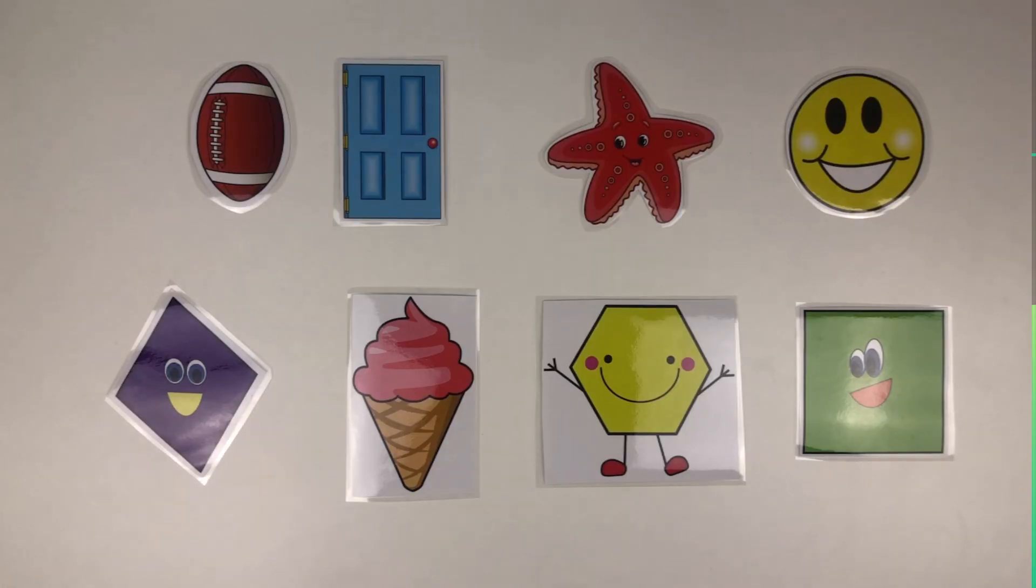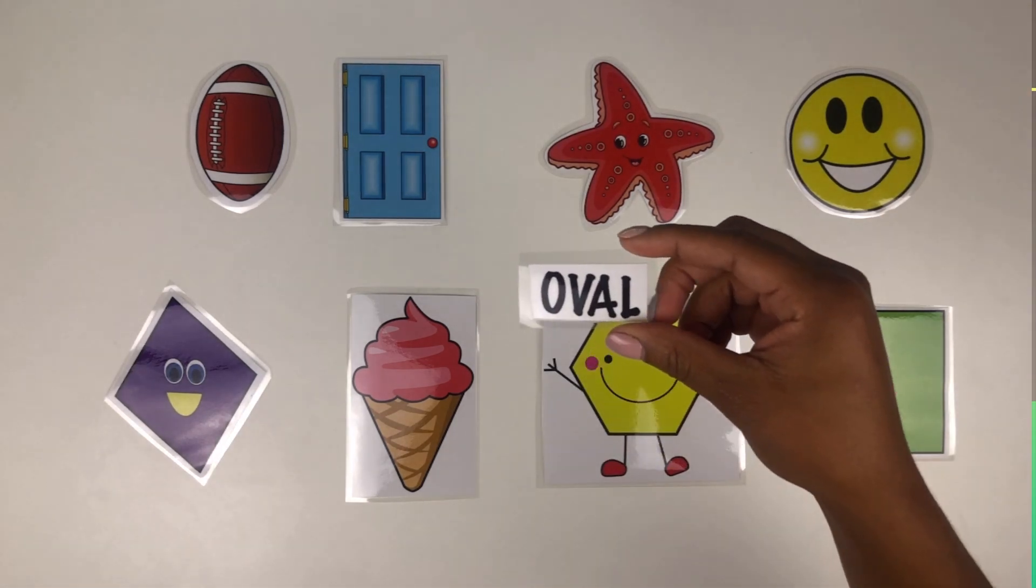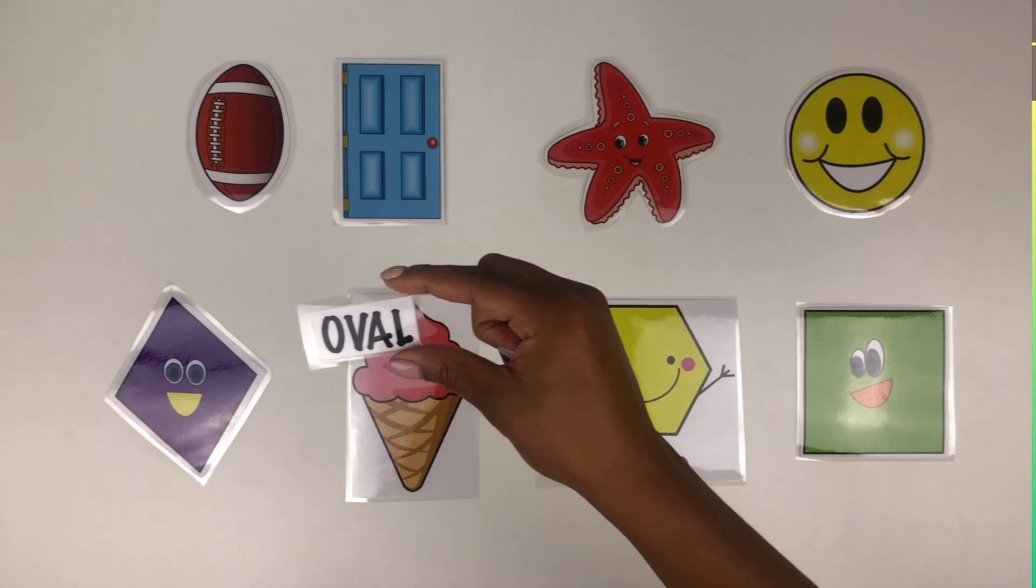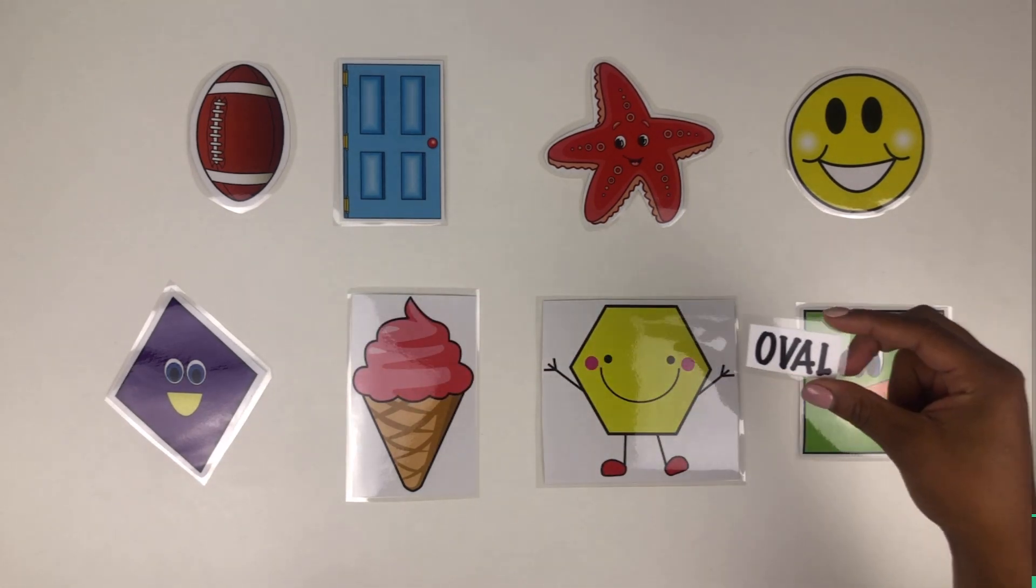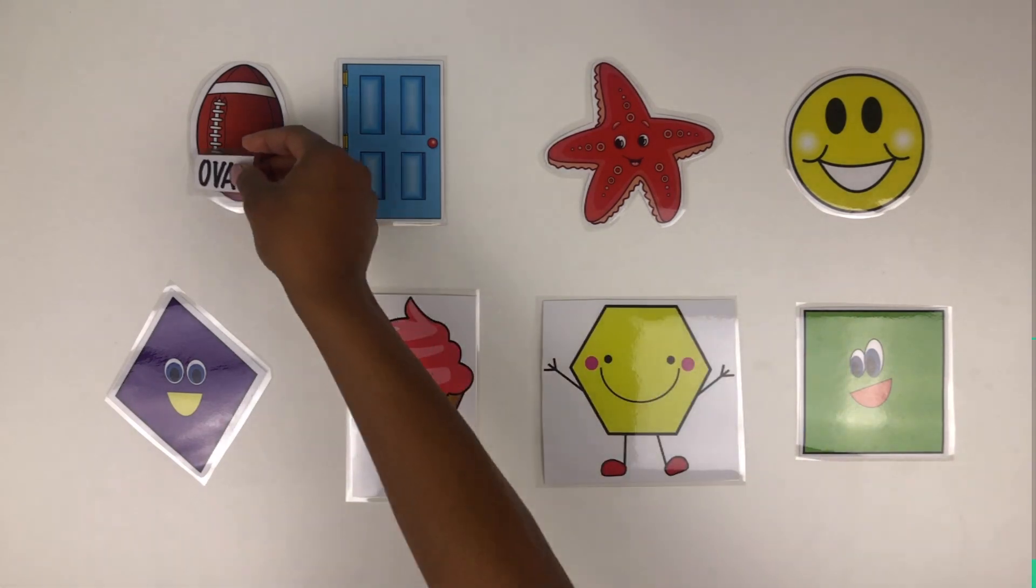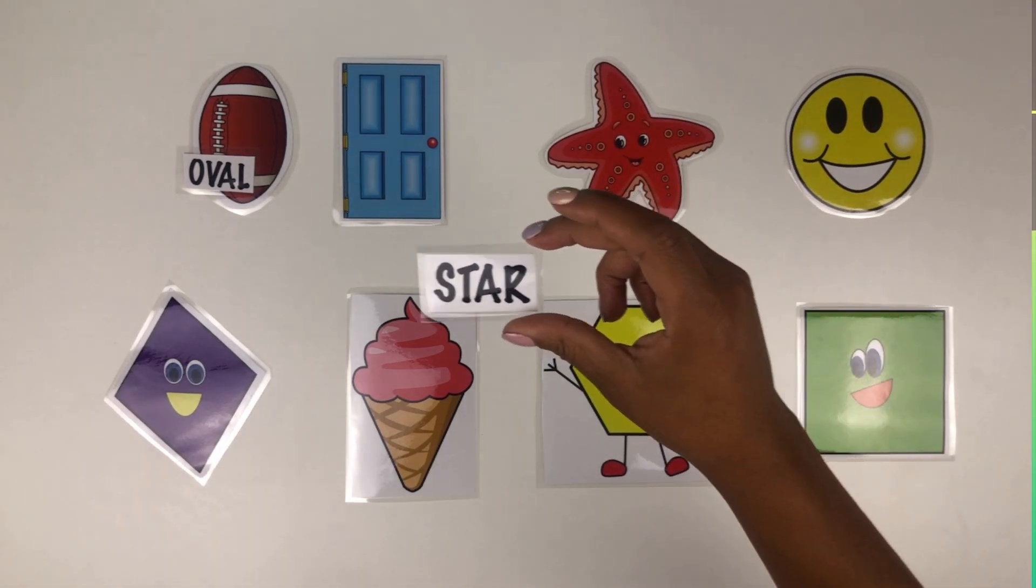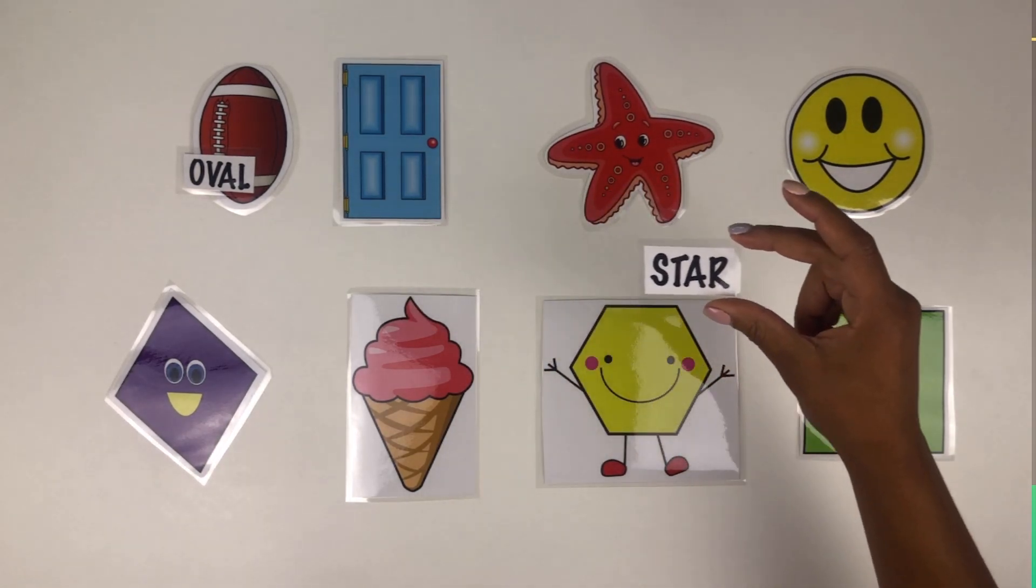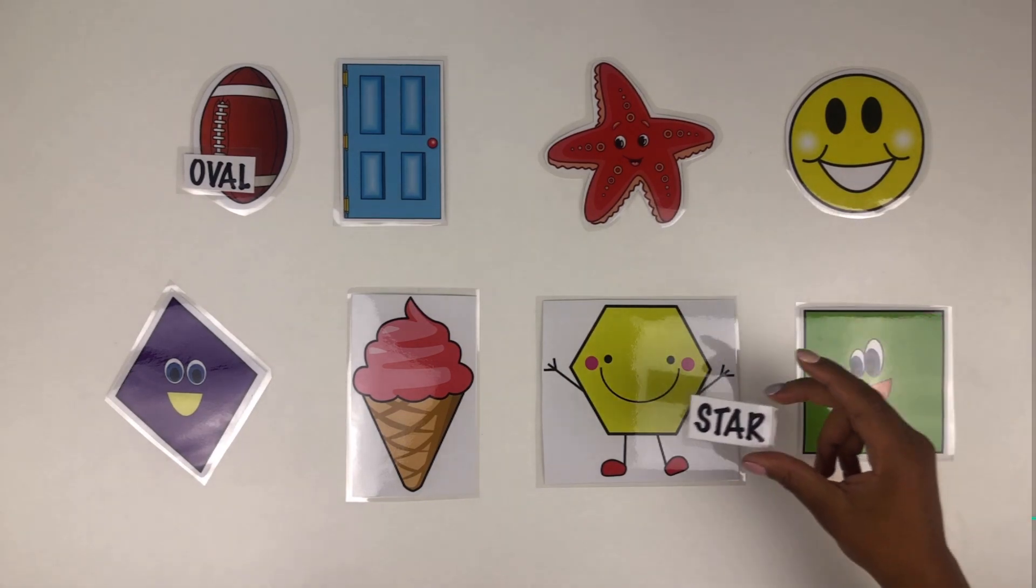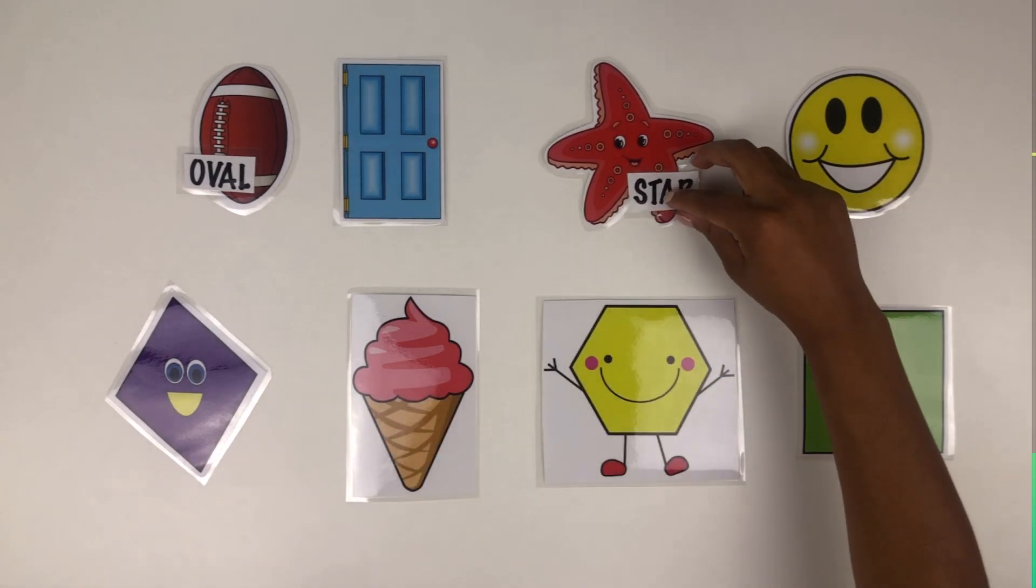Welcome friends, today we're going to be learning about shapes. Can you help me figure out which shape is which? Great. Oval, which one is oval? Oval, the football, good job. How about a star? Which shape is a star? A starfish, good job.